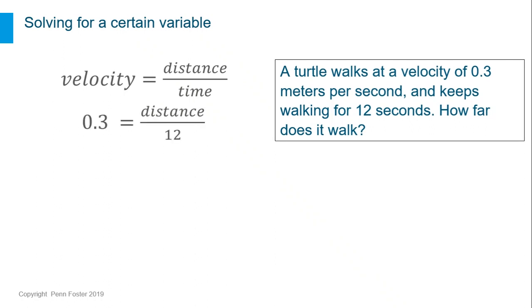When you write in the variables that you know, you see that distance is the unknown variable. You need to use the inverse operation to get distance by itself on one side of the equal sign. You have distance divided by 12, so multiply both sides of the equation by 12.